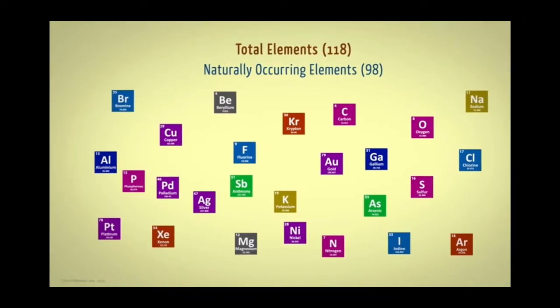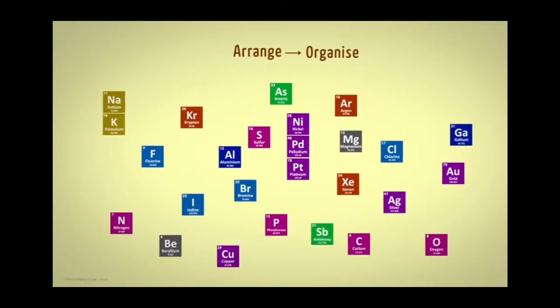Do you know the number of elements that exist? The number of naturally occurring elements are 98. But the total number of elements including manmade are 118 elements. Hence, it is difficult to learn all elements' properties individually. To study about all these elements, it should be organized.